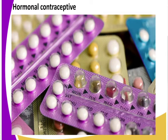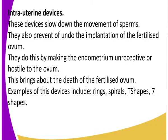Hormonal contraceptives - you can swallow them or you can be injected with them. Now let us look at intrauterine devices. 'Intrauterine' means they are inserted into the cervix of the female. For fertilization to occur, the male sperm must meet with the female ovum, and the penis must be inserted into the vagina so the sperm moves up. Intrauterine devices prevent the sperm from reaching the ovum.